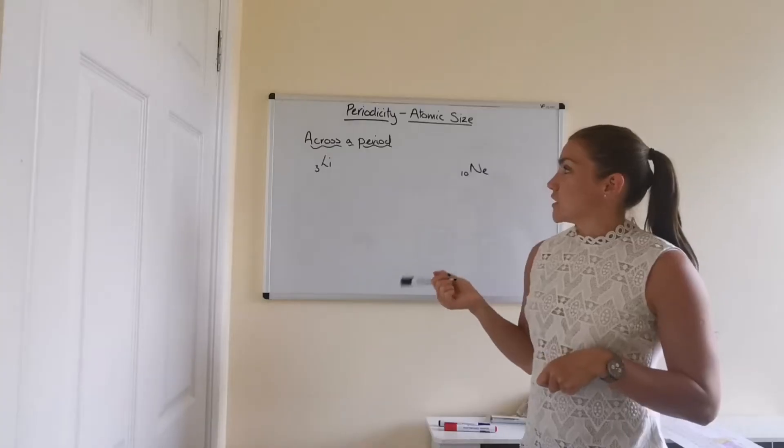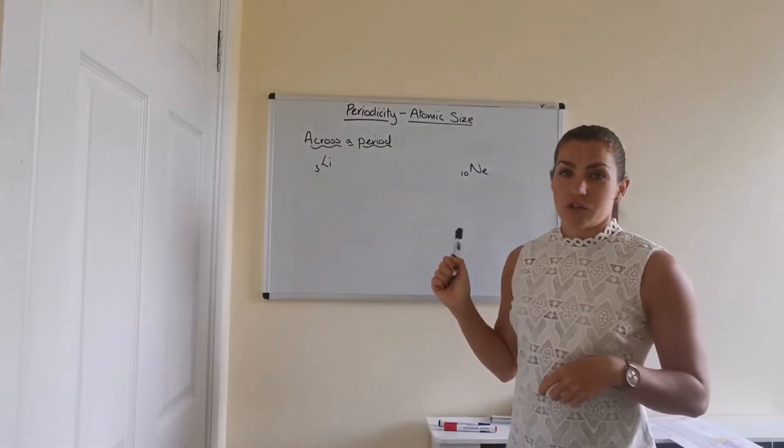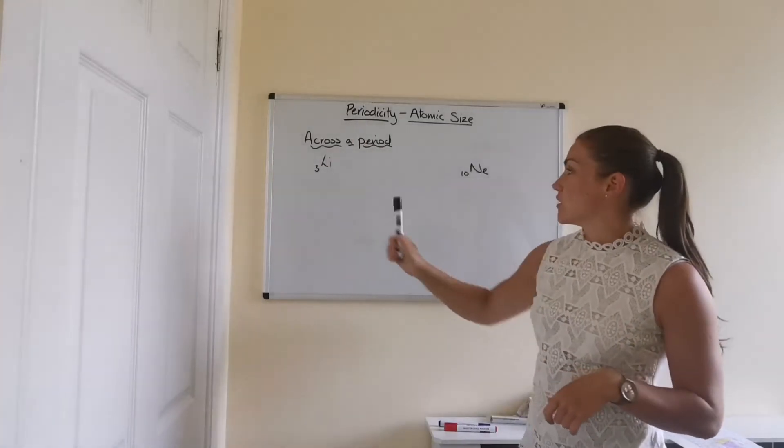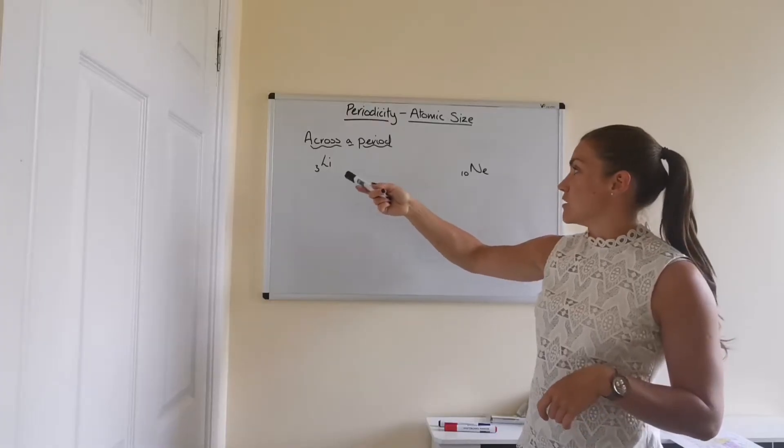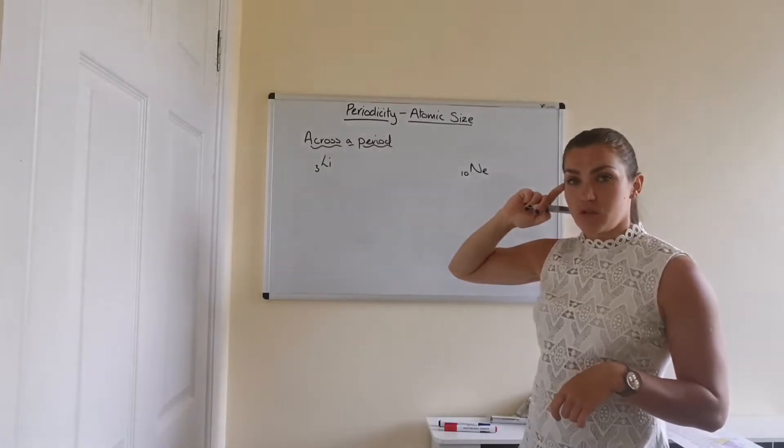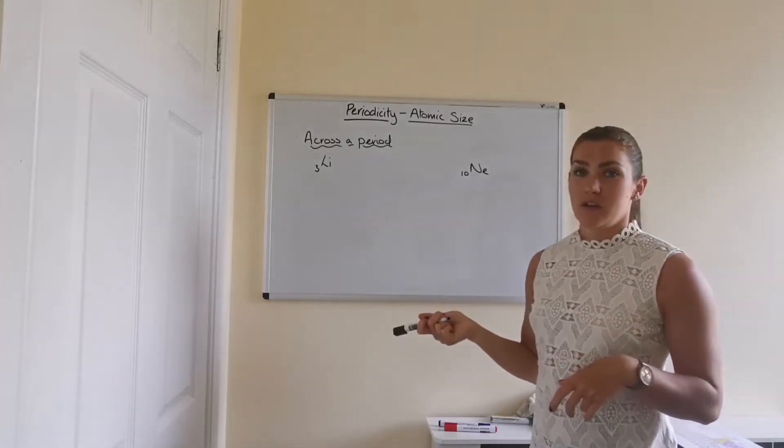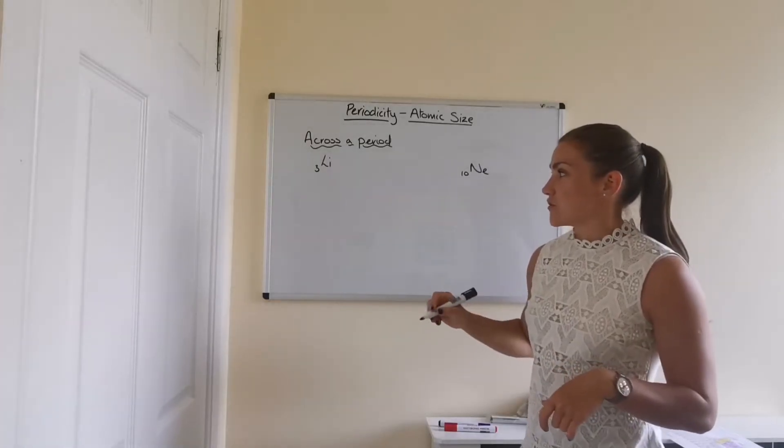But what we're going to start doing just now is looking at how the atomic size varies going across the period. So that's across from left to right. So I've got lithium here, which is the first element in the second row, in the second period, and then it goes all the way along to neon. So in order to explain this, we need to draw the structures of the atoms.